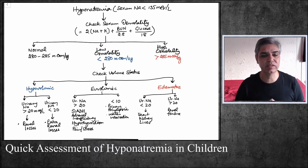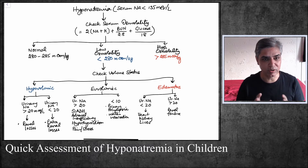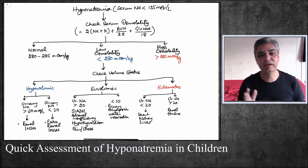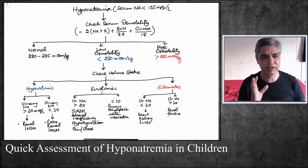Serum osmolality can fall into one of three categories. Normal serum osmolality is between 280 to 285 mOsm/kg. Low osmolality is when serum osmolality is less than 280, and high osmolality is when it is more than 285. With hyponatremia, you will get either a normal, low, or high osmolality.